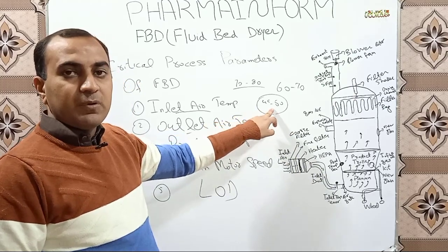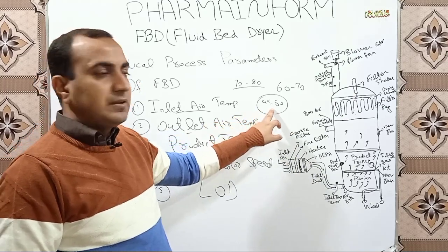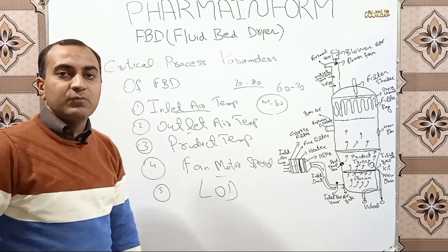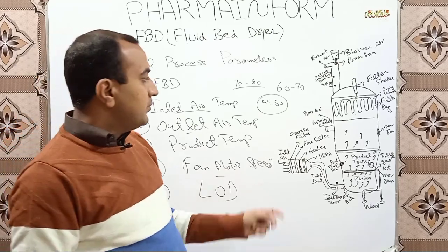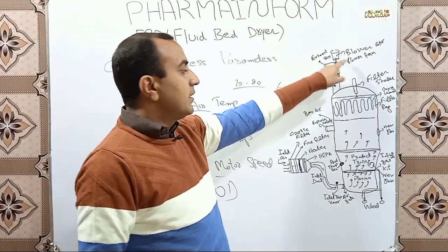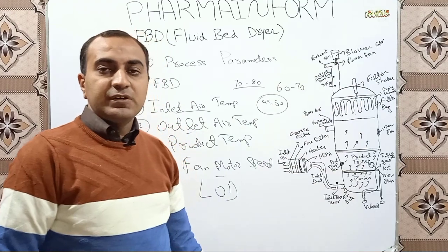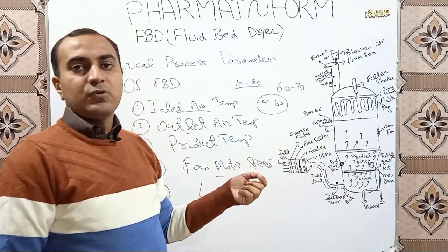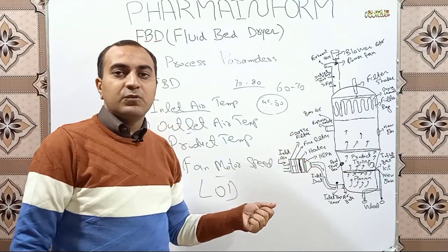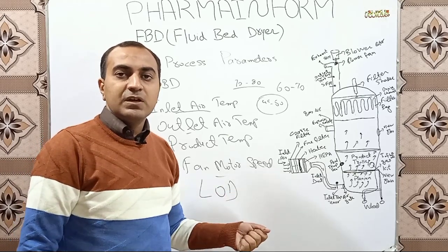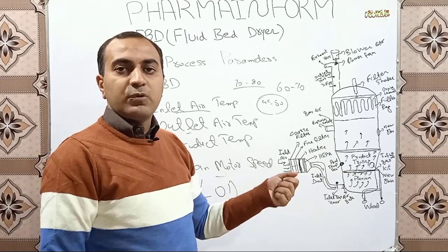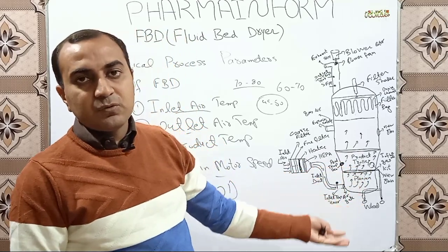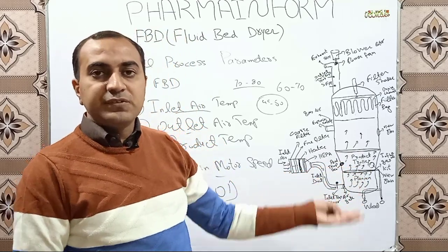The next parameter is fan motor speed. Fan motor speed is basically the speed of the blower, which results in fluidization. The fan motor speed can be controlled for proper fluidization — if the product is heavier, we can increase the fan motor speed to increase air pressure, and vice versa.